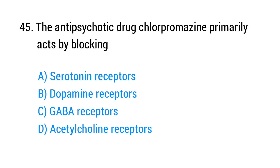Question number 45. The antipsychotic drug chlorpromazine primarily acts by blocking. The right answer is option B: Dopamine receptors.